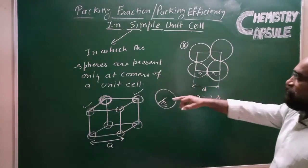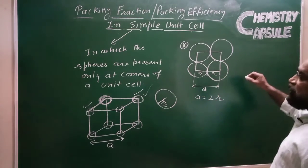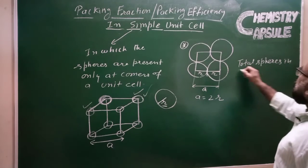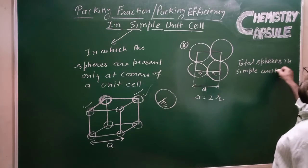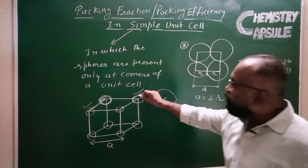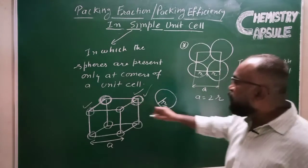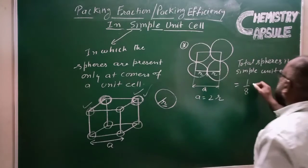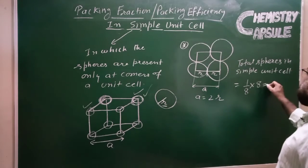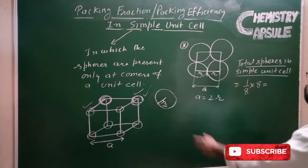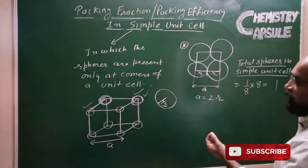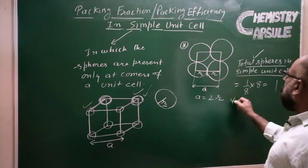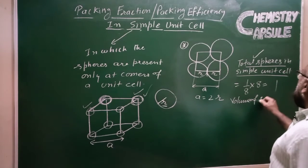Now we will calculate the number of spheres present in this simple unit cell. The total number of spheres in a simple unit cell is one — there is a single sphere effectively contained within the unit cell. We will use this single sphere and its volume in our calculation.